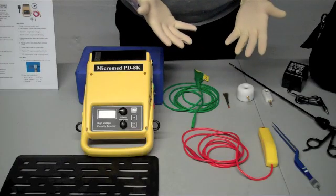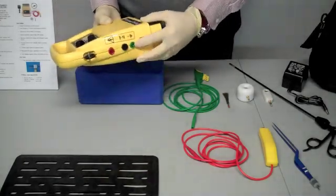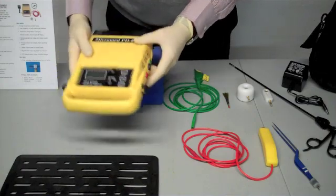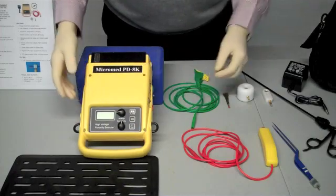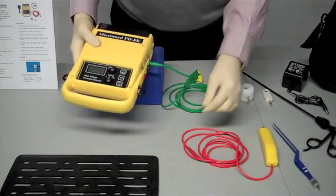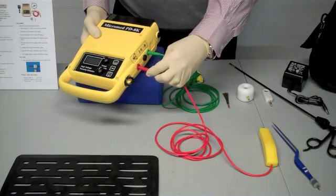Make sure you put surgical gloves on to protect yourself during testing. On the side of the unit we have a green port and a red port. We'll now insert the green ground wire into the green port, the red high voltage wire into the red port.